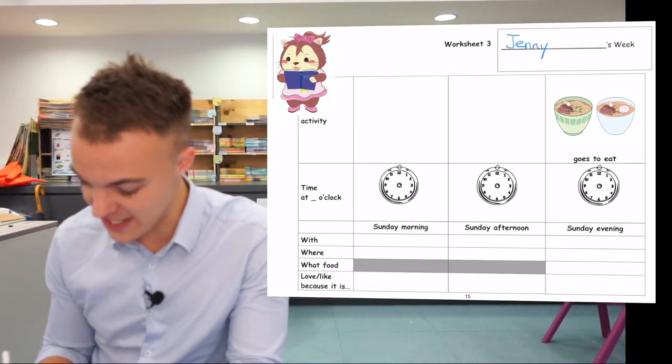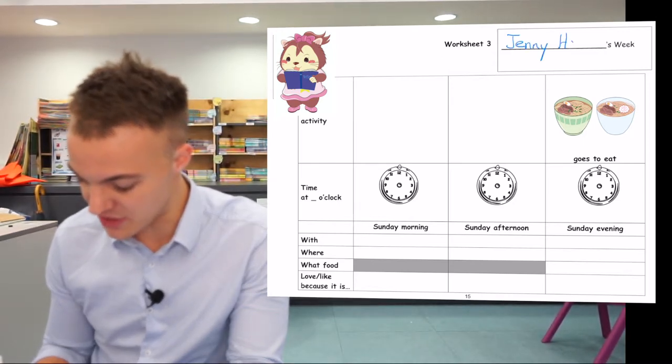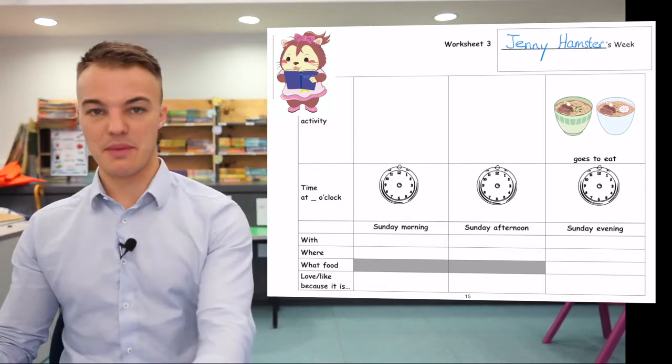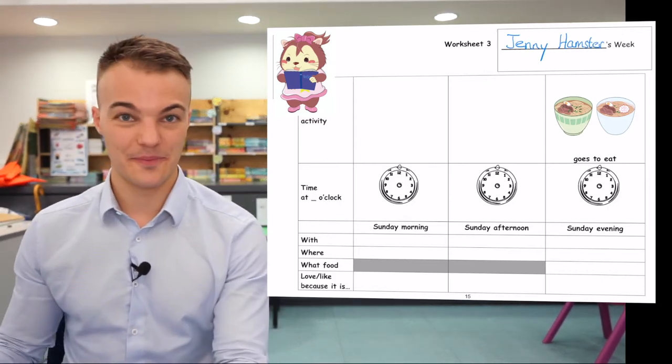Big letter J for Jenny. Big letter H for Hamster because it is her name. Jenny Hamster's week.